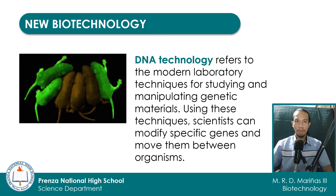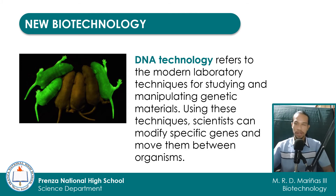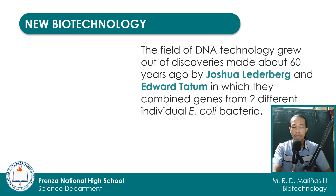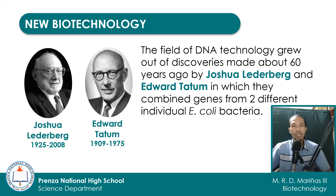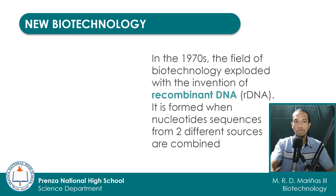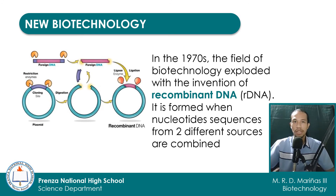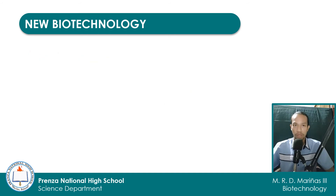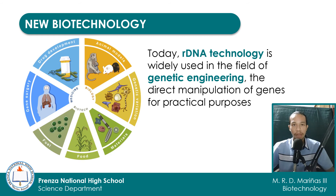This new biotechnology led to the development of DNA technology, which refers to modern laboratory techniques for studying and manipulating genetic materials. Using these techniques, scientists can modify specific genes and move them between organisms. The field of DNA technology grew out of discoveries made about 60 years ago by Joshua Lederberg and Edward Tatum, in which they combined genes from two different individual E. coli bacteria. In the 1970s, the field of biotechnology exploded with the invention of recombinant DNA or R-DNA, which is formed when nucleotide sequences from two different sources are combined. Scientists are able to insert genes of interest into bacteria plasmids that can be used as cloning vectors. Today, recombinant DNA technology is widely used in genetic engineering — the direct manipulation of genes for practical purposes — such as the creation of genetically modified organisms and mass production of useful chemical, pharmaceutical, and medical products.